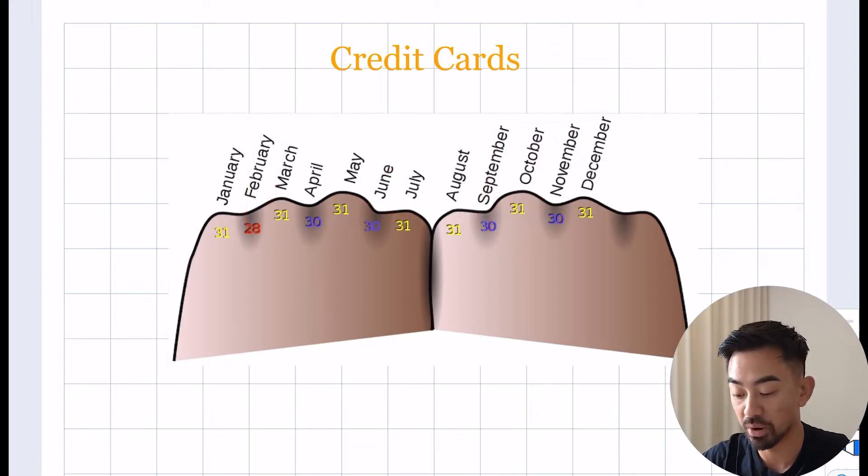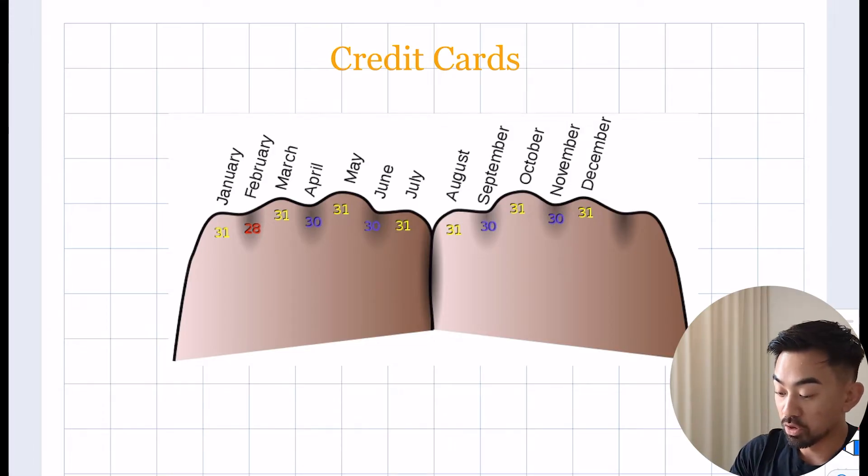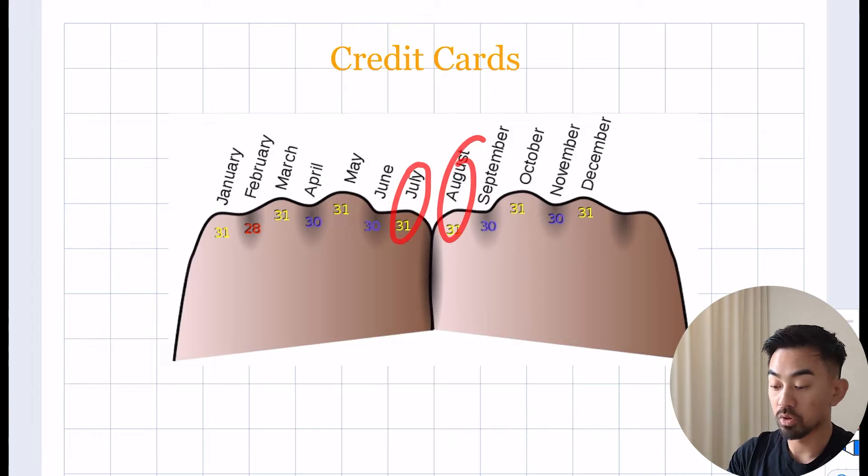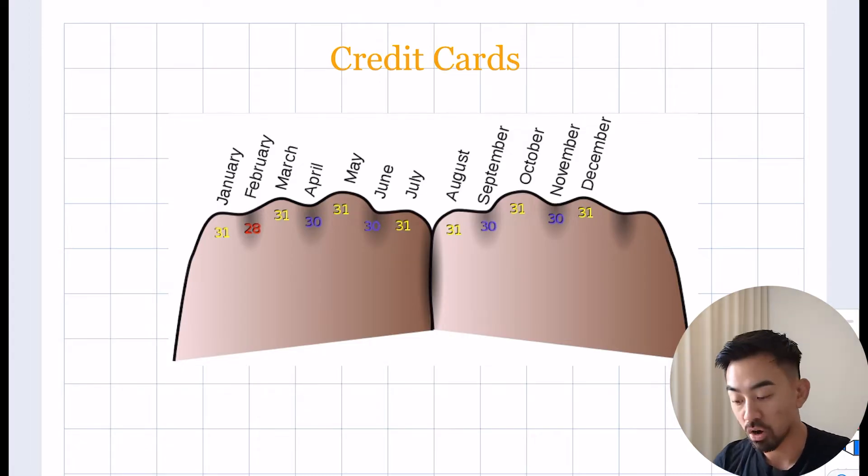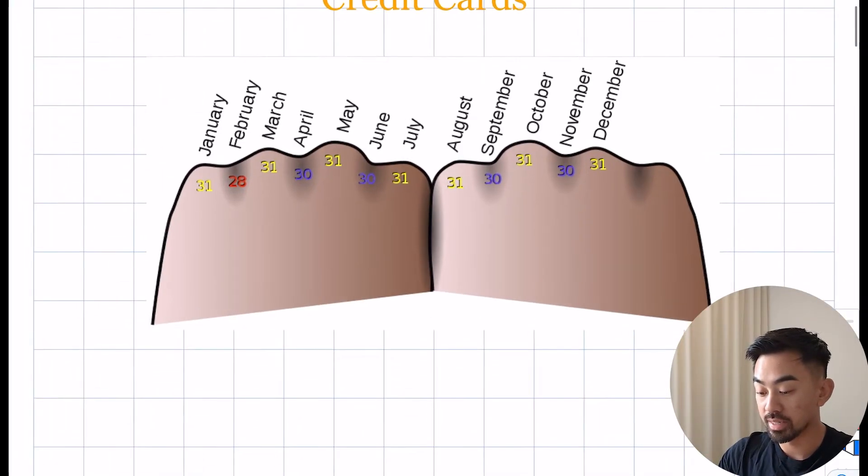April is 30 days, June, September, and November. The only exception is February, which is only 28 days. One important thing to note is these knuckles go back to back - July and August - and they are both 31 days. That is something super important to understand when we're doing these credit card payments because interest is calculated every single day.